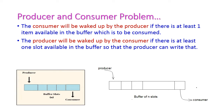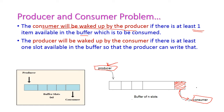The consumer will be woken up by the producer. If there is at least one item available in the buffer that the producer has written, the producer will wake up the consumer so it can consume that buffer slot. Similarly, when the producer is in sleep mode and there is one empty slot available, the consumer will wake up the producer so it can write something to the buffer slot.